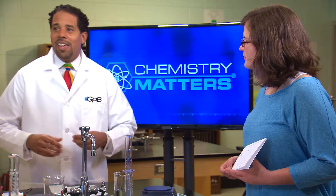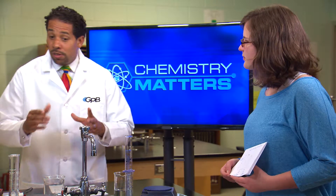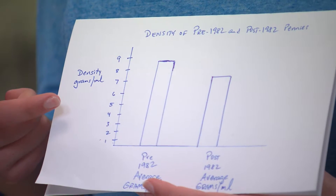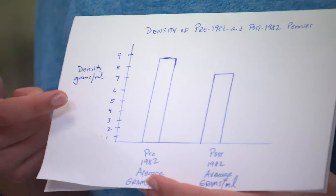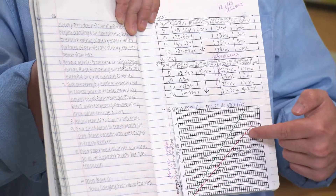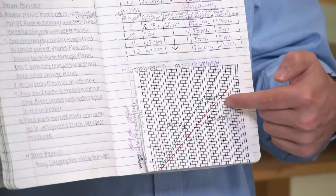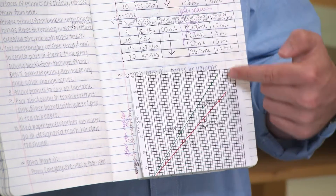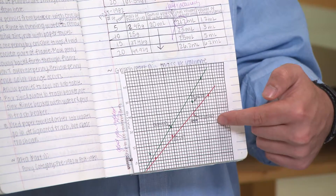A bar graph is a visual representation of data in the data table, and it's helpful when you're describing differences between discrete categories, such as the older penny versus the newer pennies. Bar graphs are fine. But in this lab, the line graph lets you easily see trends in continuous data, because you can actually calculate the slope of the line and determine the density of the pennies in each group. Our lab directions called for you to graph data from each penny and then use the slope to determine the density.